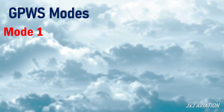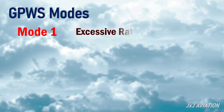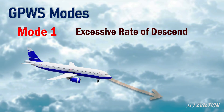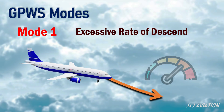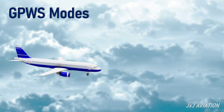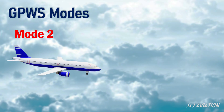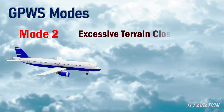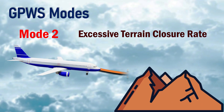Mode 1 is excessive rate of descent. This alert is triggered if the aircraft is descending too fast. Mode 2 is excessive terrain closure rate. This alert is triggered when the aircraft is rapidly approaching a rising terrain.